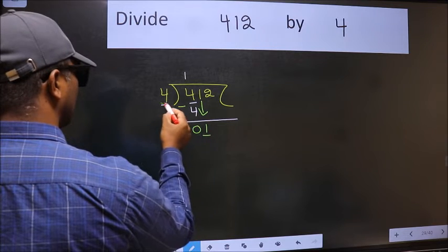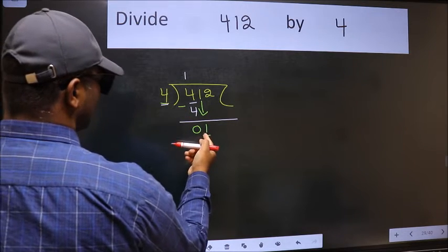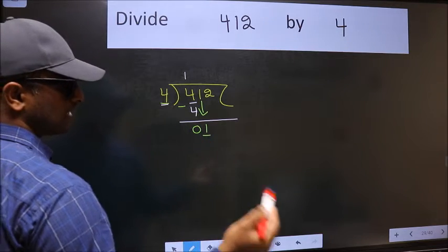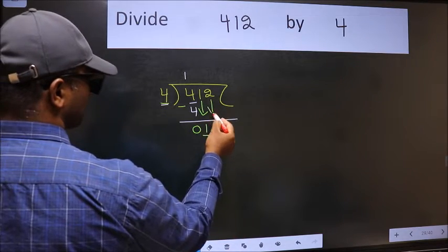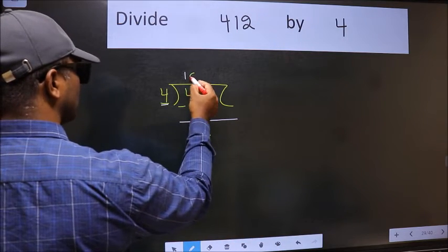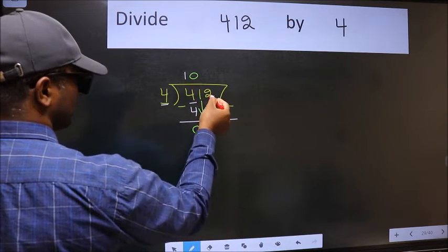Now here we have 1, and here 4. 1 is smaller than 4, so we should bring down the second number. And the rule to bring down the second number is we should put zero here, then only we can bring this number down.